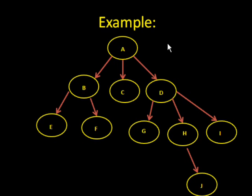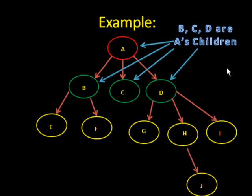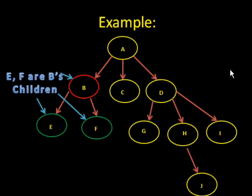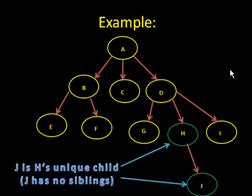Now, B, C, D are all of A's children. And also, E, F are all B's children. E and F can be called siblings because they're sort of related to one another. They have the same parent. J is H's only child because J has no other siblings and H only has one child.